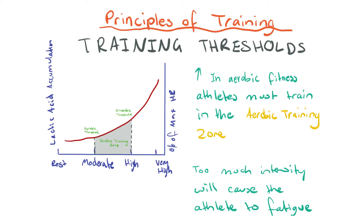For athletes to start seeing improvements in aerobic fitness, they need to train at or above the aerobic threshold. If training below that aerobic threshold, there will be minimal gains. The greatest aerobic training effect is experienced when training is done at or near the anaerobic threshold, because the anaerobic threshold represents the maximum capacity of the aerobic energy system to produce energy.